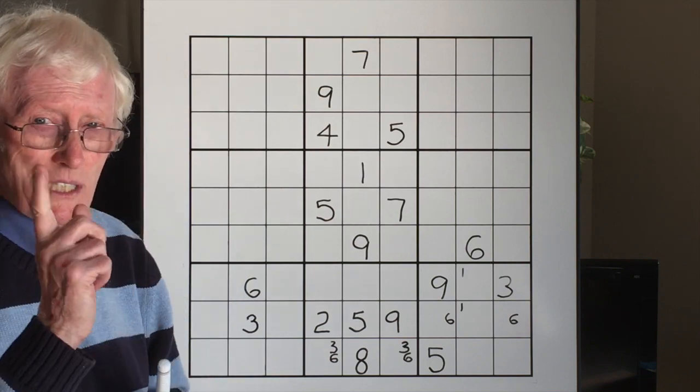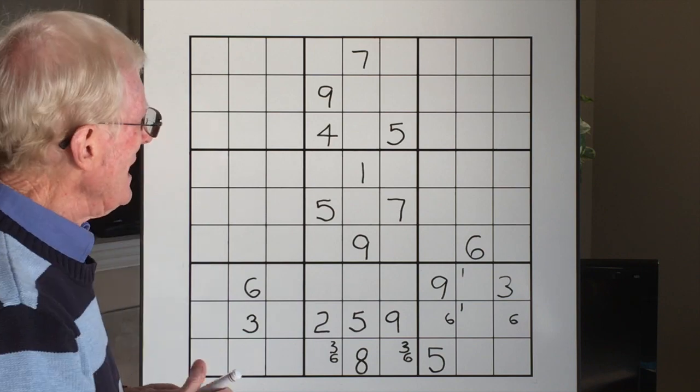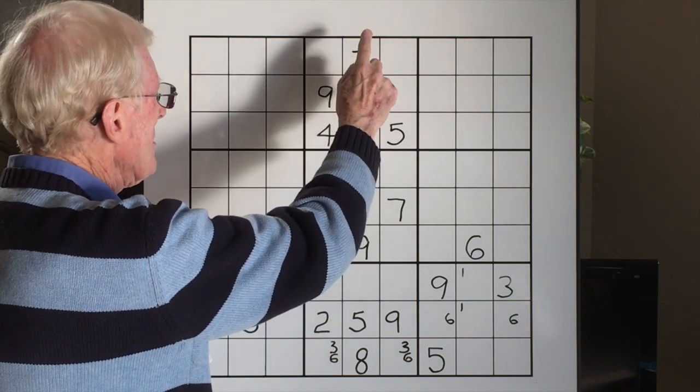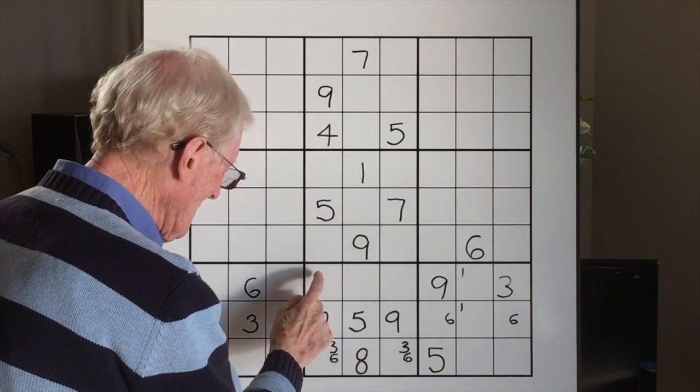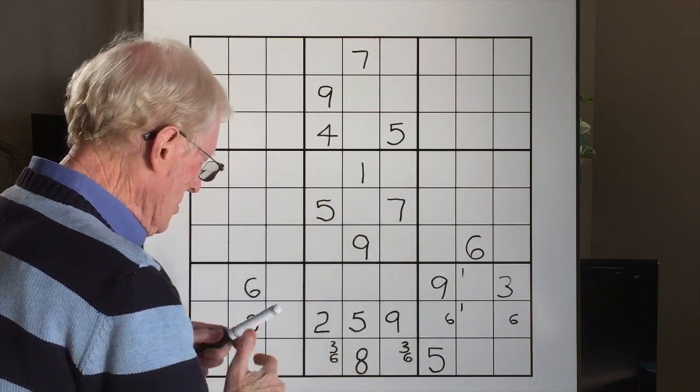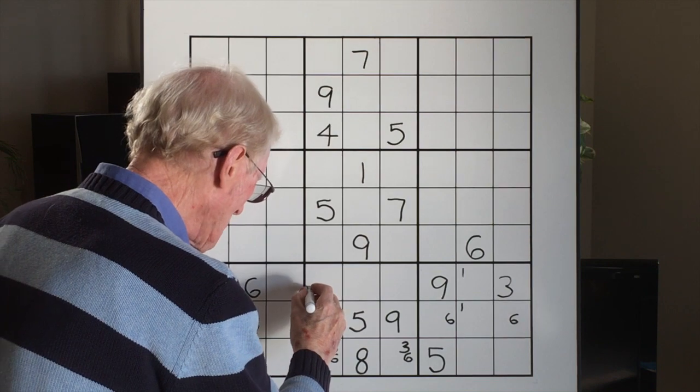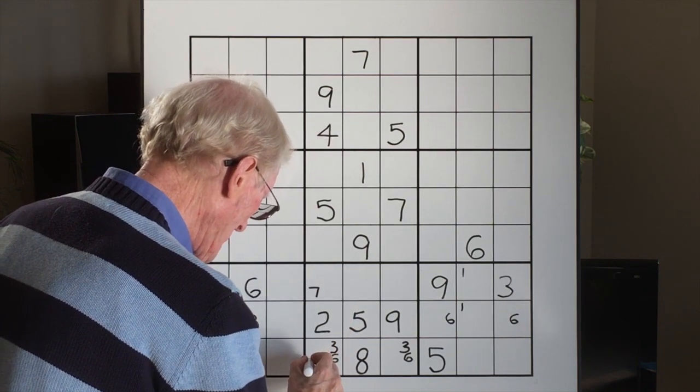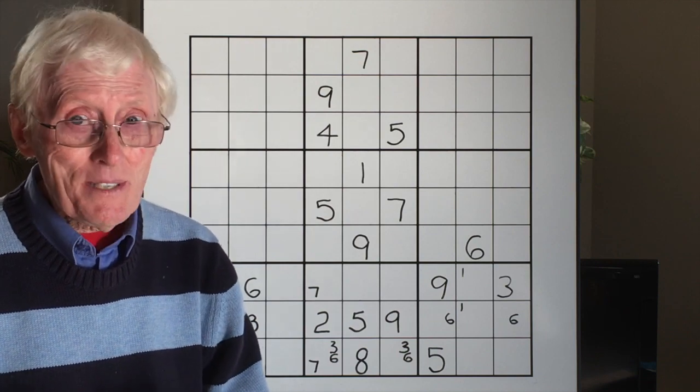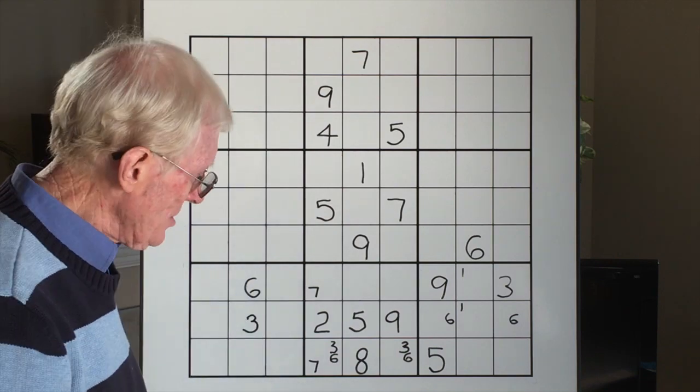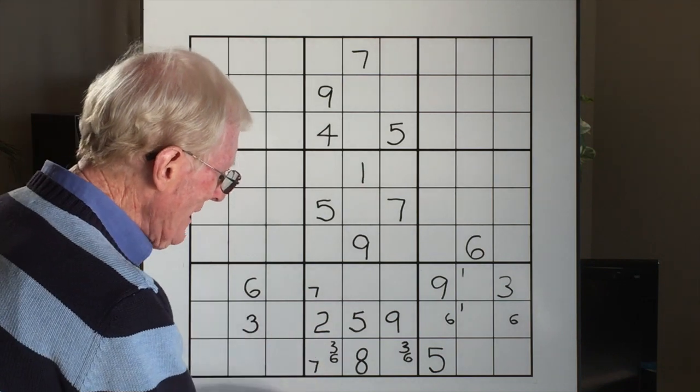He looked at the sevens up here and he said if we have a center, we have a right in this block, it has to be on the left, which is correct. So what he did, he put a seven here. Seven can go there? No, no, no, no, no, let me explain why you can't do that.